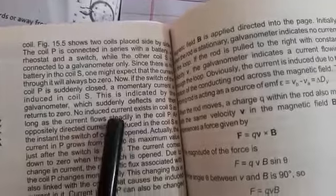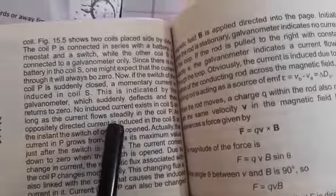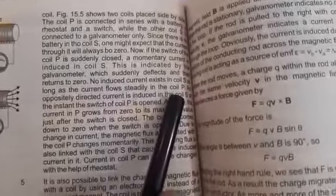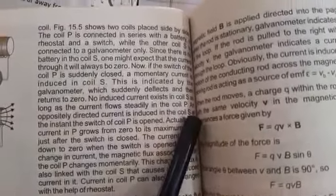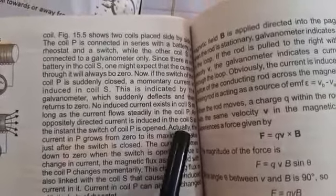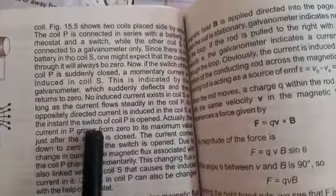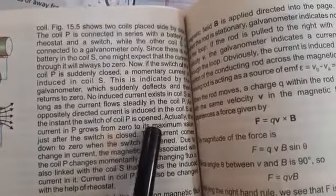No induced current exists in coil S as long as the current flows steadily in coil P. An oppositely directed current is induced in the coil S at the instant the switch of coil P is opened.